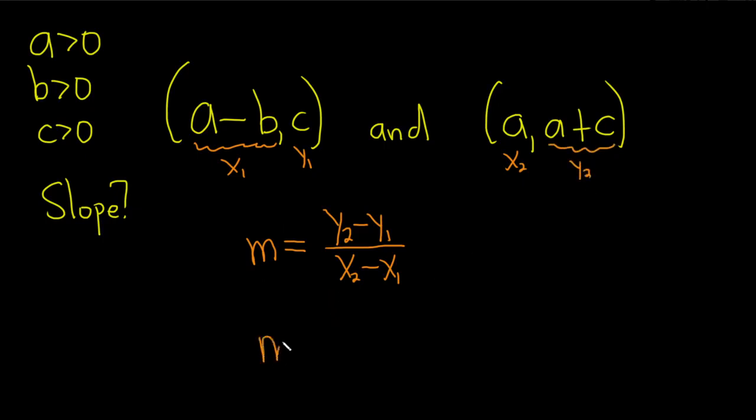Alright, so let's do this very carefully. So m is equal to, let's see, it's y2 minus y1. So y2, which is a plus c, minus y1, which is c. So a plus c minus c.